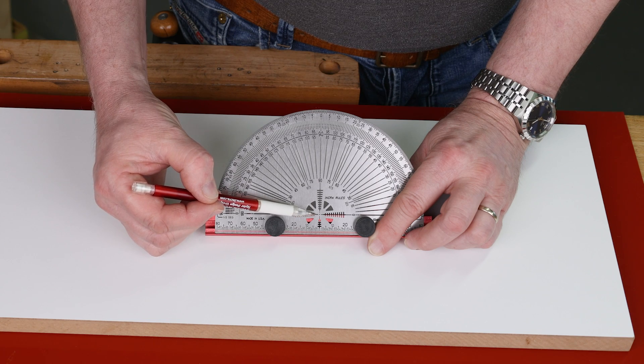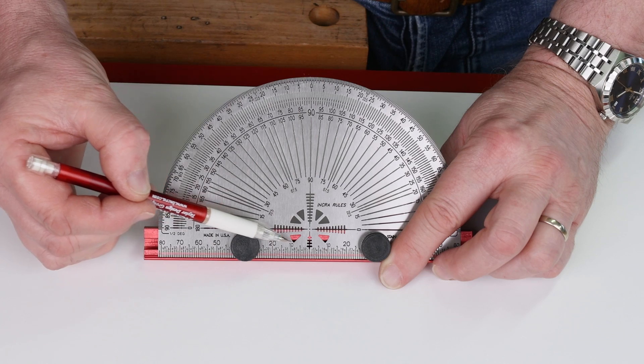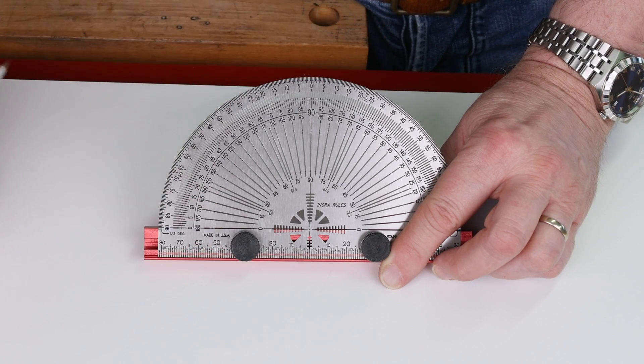We have a centre dot so we can put this precisely over the centre of our marking out. Also we have a ruler that comes out both directions in millimetres from the centre line.